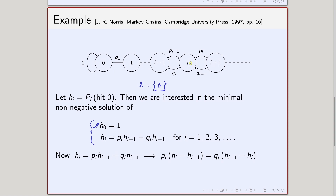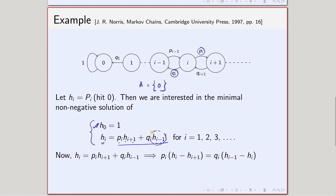For any general state i, in one step I can go to i+1 or i-1. The probability of going to i+1 is p_i, so the contribution is p_i times h_{i+1} — since from i+1 I still have to reach 0. Similarly, from i I can go to i-1 with probability q_i, and from there I have to reach 0, so that contribution gives q_i times h_{i-1}. This holds for i = 1, 2, 3, ... and so forth.